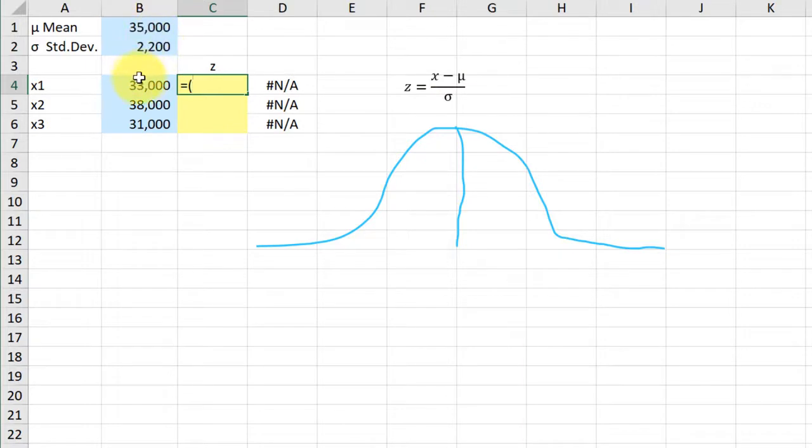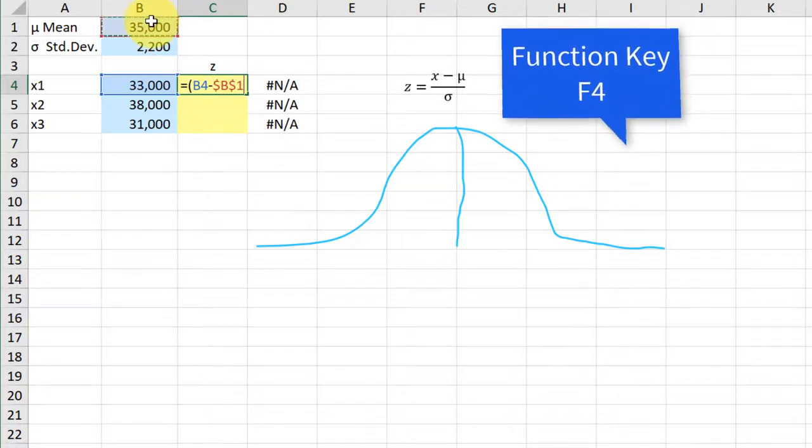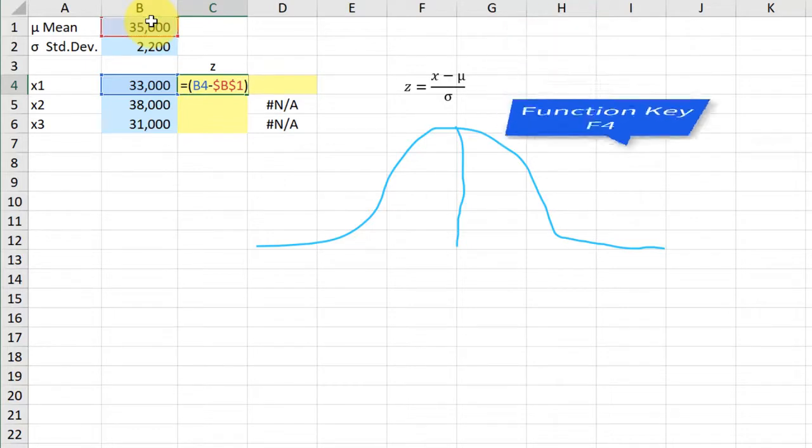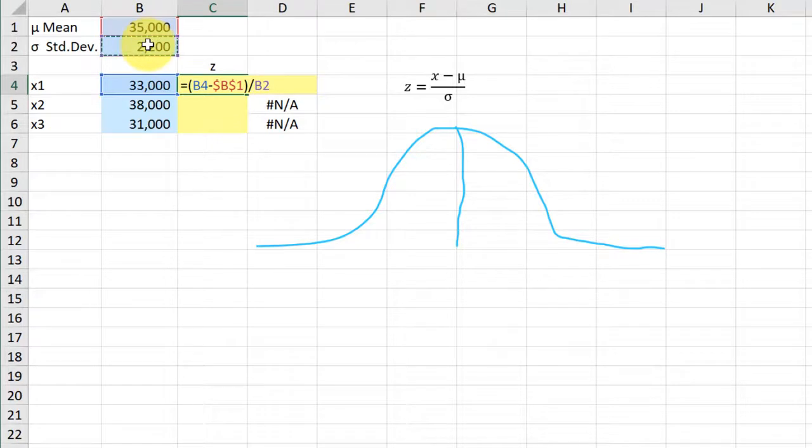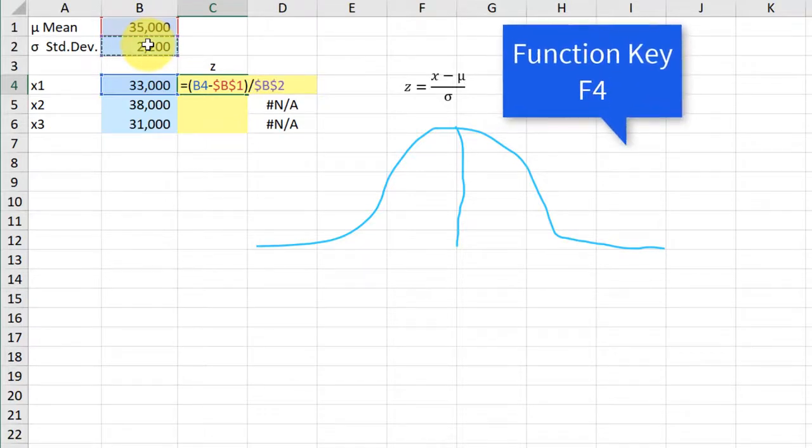We're going to take the x-value minus the mean, and then we're going to hit the function F4 key to lock that down and close it, put the division by the standard deviation, and then we're going to hit F4 again to lock that down.